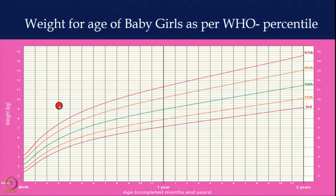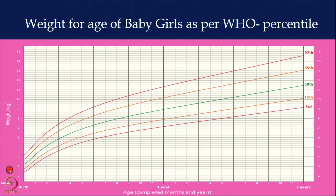I like the birth to 6 months chart for Anganwadi workers or Asha workers because they are still learning and may have difficulty plotting. In that chart weight is given in weekly increments, which makes it very easy for them to plot. For older children you can take birth to 5 years — it depends on which chart and which program you are working in.